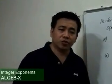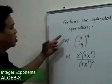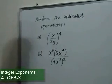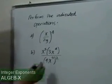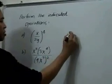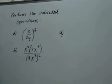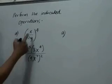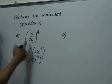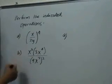We're going to use the law of exponents again in performing the indicated operations. For letter A, we have x over 2y raised to the 4th. This is just x to the 4th divided by quantity 2y to the 4th.